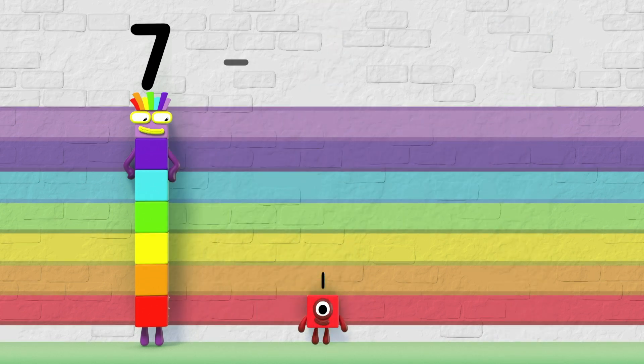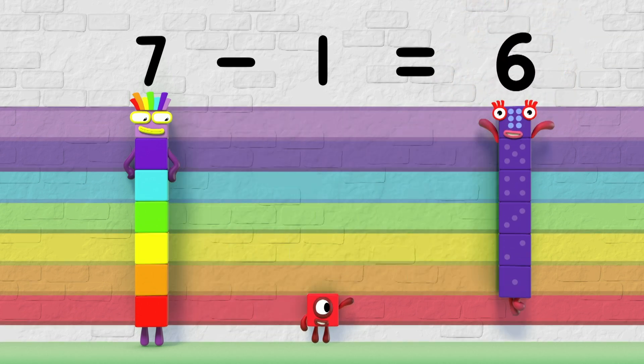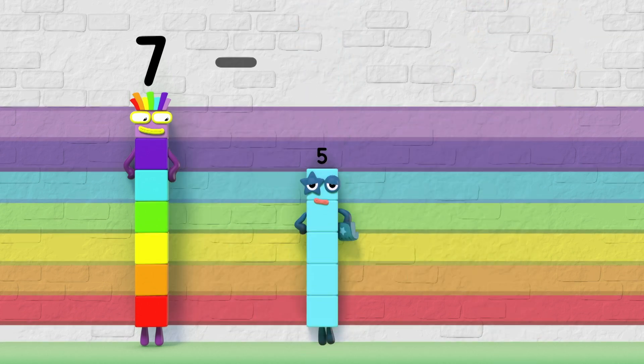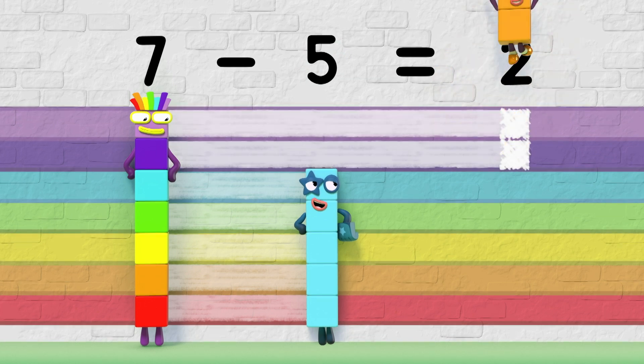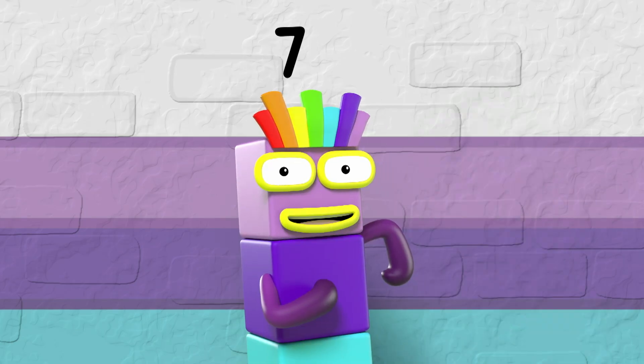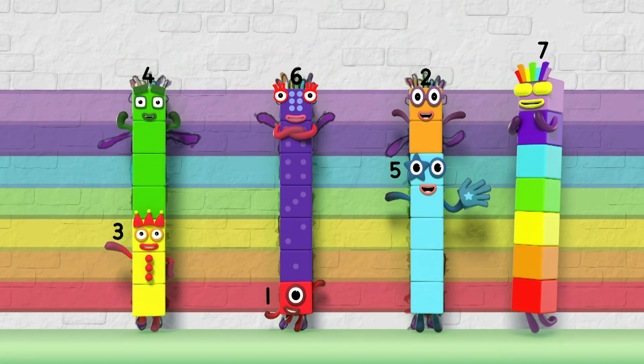Seven minus me equals six. That's the difference. Six. Seven minus five equals two. That's the difference. So make up the difference and everyone will see what the difference is between you and me.